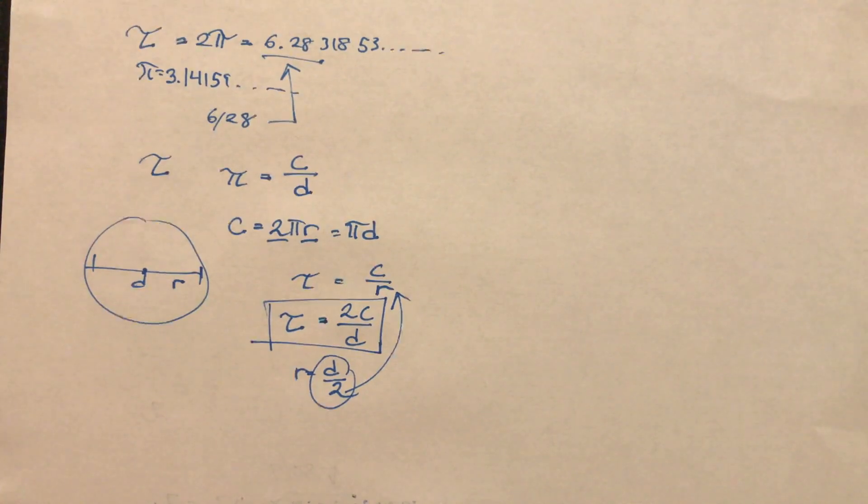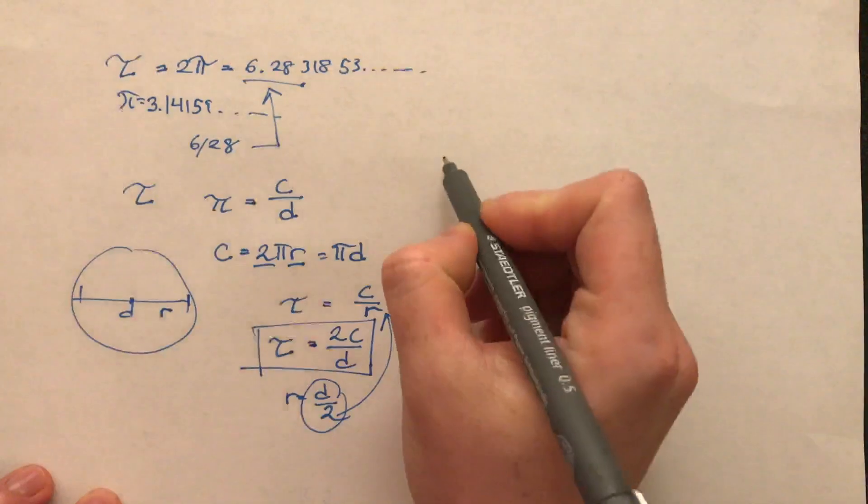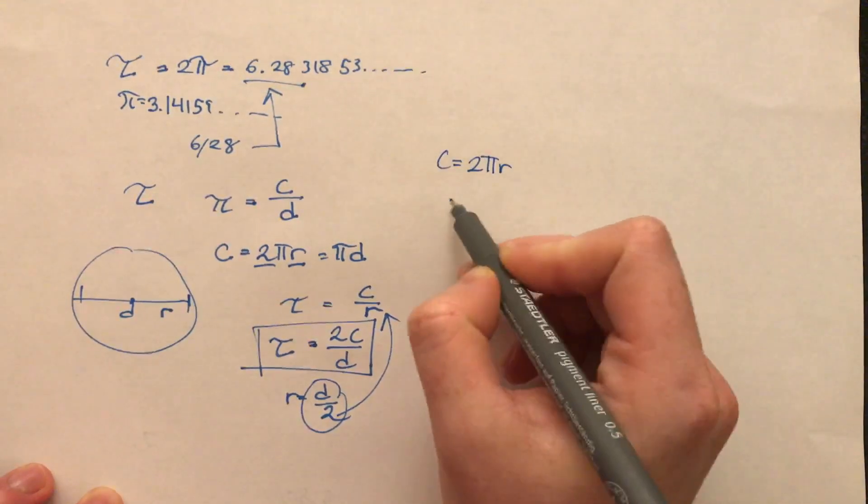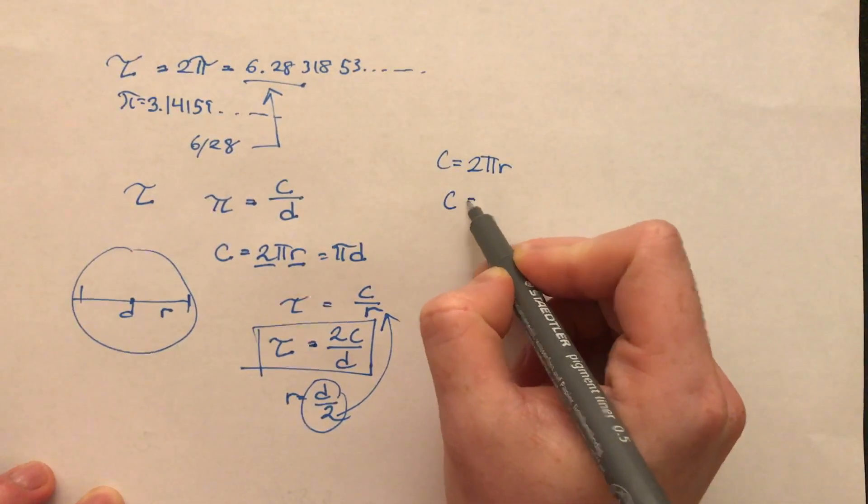There are a lot of different applications of tau. For example, we can simplify the formula for circumference is equal to 2 pi r by just writing circumference is equal to tau r.